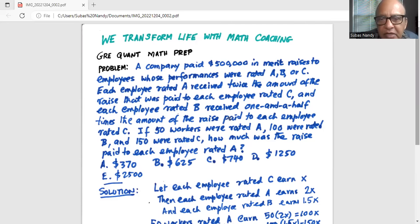Each employee rated A received twice the amount of the raise that was paid to each employee rated C, and each employee rated B received one and a half times the amount of the raise paid to each employee rated C.